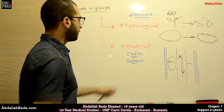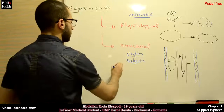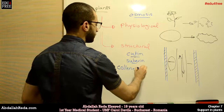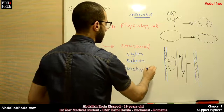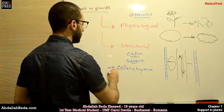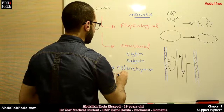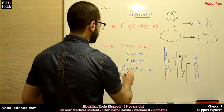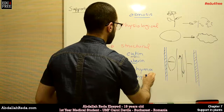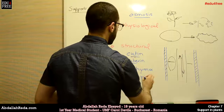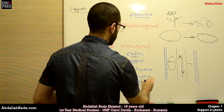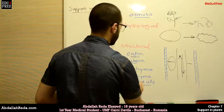We have collenchyma cells, which contain cutene, and sclerenchyma cells, which contain suberine. Sclerenchyma cells are also called stone cells due to their rigidity.